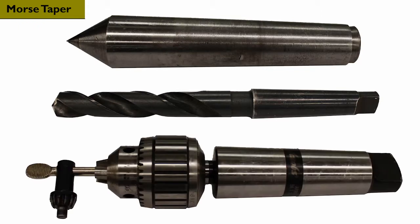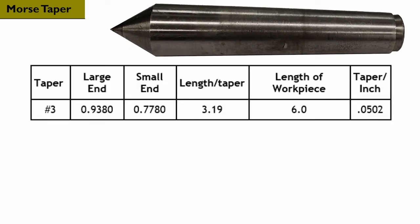Next, let's look at a Morse taper. This is a standard machine taper that's commonly used for holding cutting tools or tool holders. We've selected a number 3 Morse taper, which has these specifications.